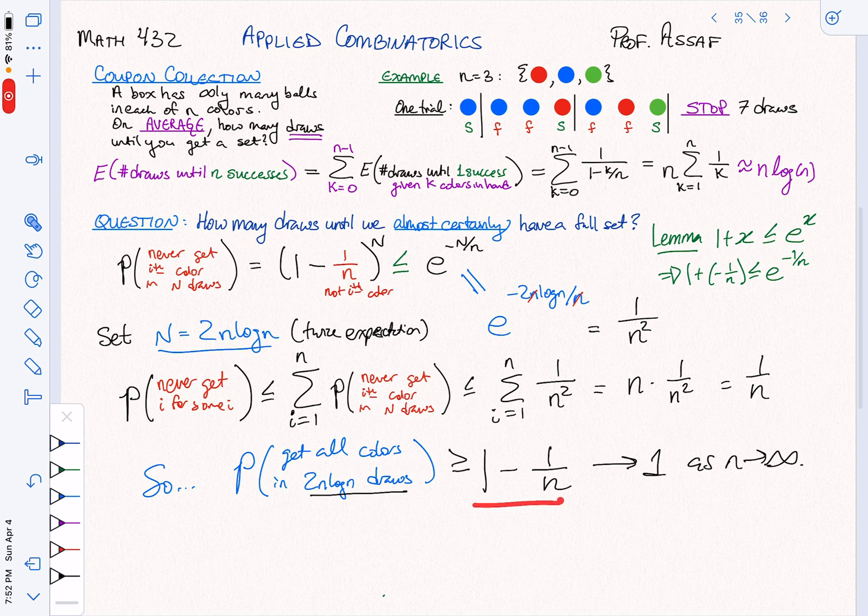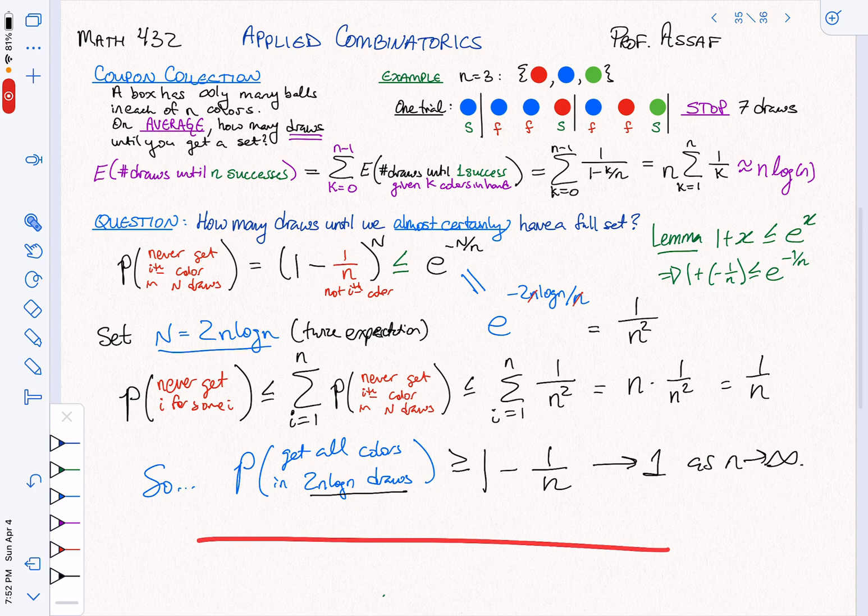The conclusion is that I'm almost certainly going to do it. If I take this n equals 3 case and I do 11 draws, then there's a two-thirds chance I'm going to get everything in 11 draws. But as the number of colors goes up, this is going to 1. So it's almost certainly going to happen. We can make that more precise, but this is where we're going to stop with discrete combinatorics.